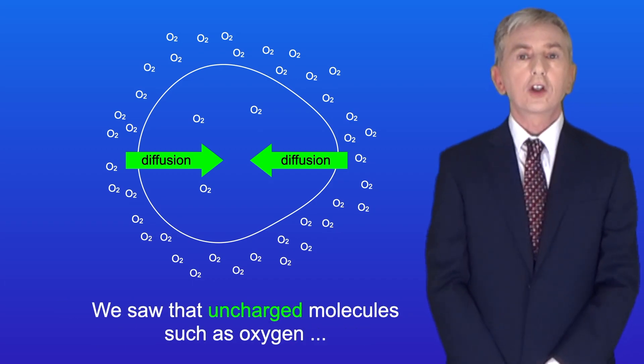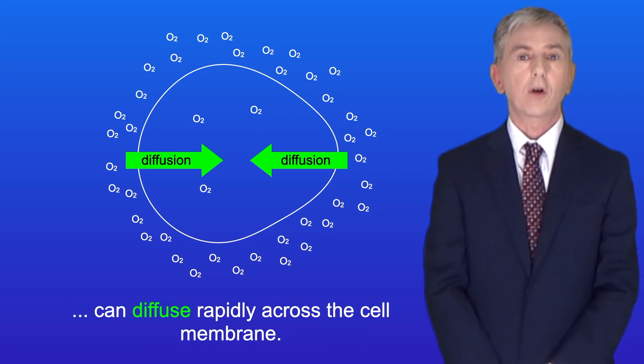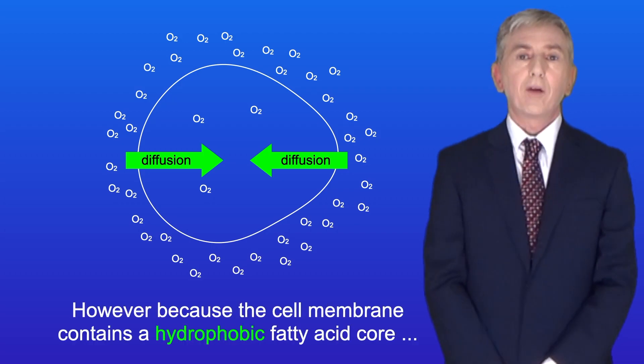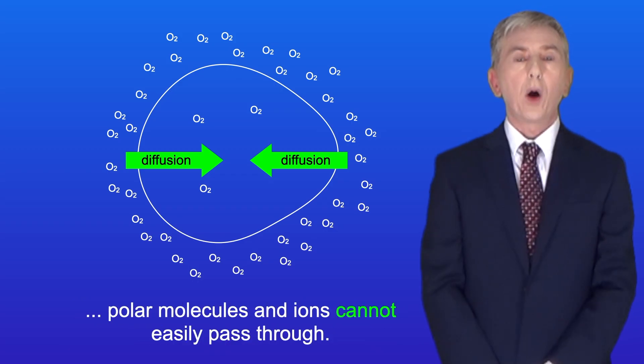We saw that uncharged molecules, such as oxygen, can diffuse rapidly across the cell membrane. However, because the cell membrane contains a hydrophobic fatty acid core, polar molecules and ions cannot easily pass through.